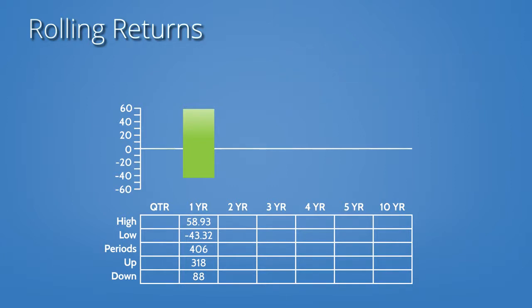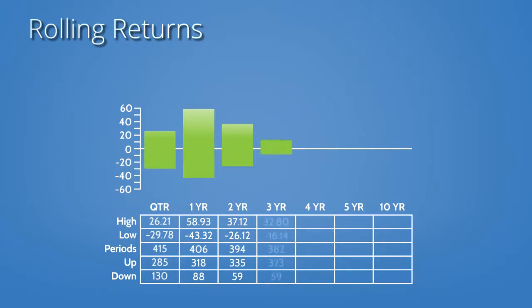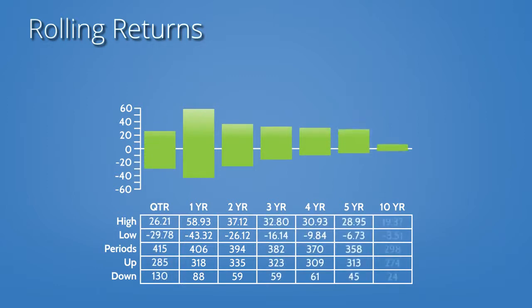We then repeated that same type of calculation, but for a two-year investment period, again starting on September 1, 1976, and figuring out the trailing period returns for 394 two-year periods. As before, we stack ranked them from highest to lowest. We continue on with this methodology for additional holding periods until we have this graph and table.